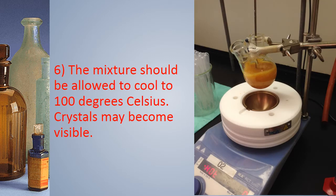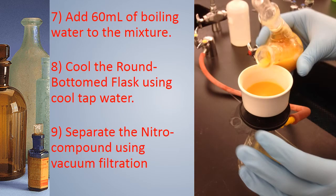The mixture should then be allowed to cool to 100 degrees Celsius and crystals may become visible. We then add 60 milliliters of boiling water to the mixture. We cool the round bottom flask using cool tap water and separate out the nitro compound using vacuum filtration.